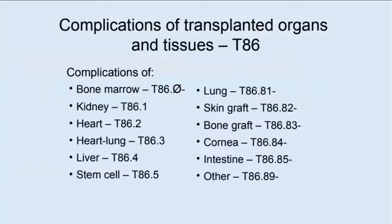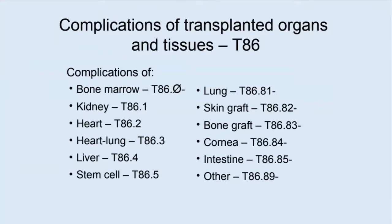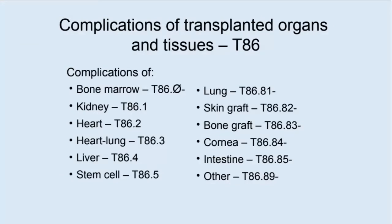A complication of a transplant procedure is coded to T86 in Chapter 19. Each transplanted organ has its own code: heart is T86.2, bone graft is T86.83 with additional digit, liver is T86.4. These are very specific codes.